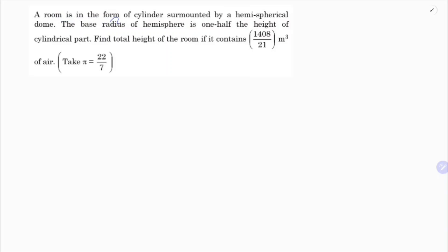A room is in the form of a cylinder surmounted by a hemispherical dome. The base radius of the hemisphere is one half the height of the cylindrical part. Find the total height of the room if it contains 1408/21 cubic meters of air.